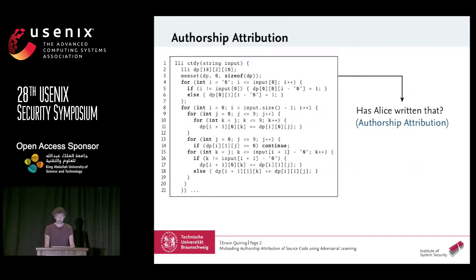Here we can see a source code example, and the question is: who is the author? Let's say we would like to find out if it was Alice. Authorship attribution can answer this by identifying the author of a given source code by exploiting the individual stylistic patterns.